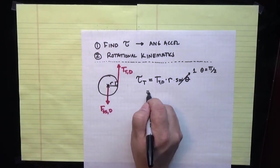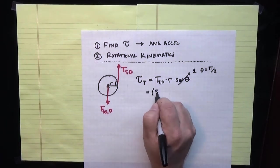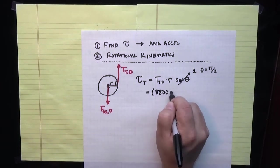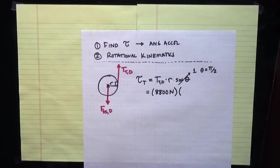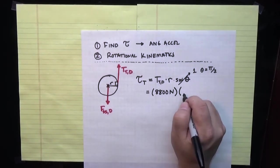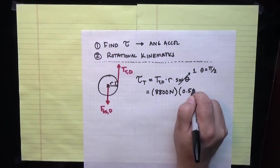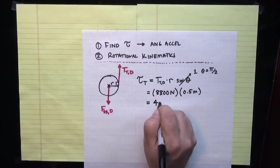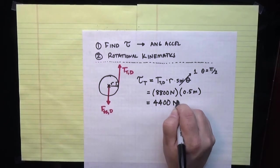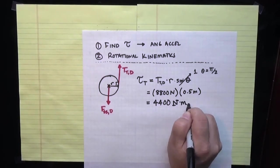I can tell you then what the torque is. It's equal to the tension in the tether, which we're told is 8,800 newtons, times the radius of the drum, which is the lever arm, which we're told is 0.5 meters. So we see that the torque in this problem is 4,400 newton meters.